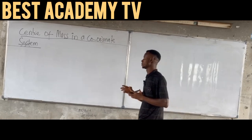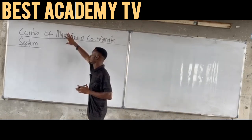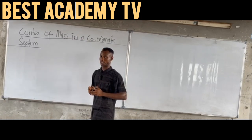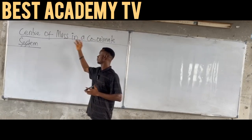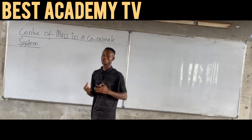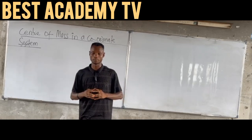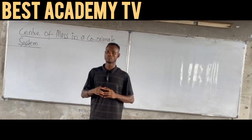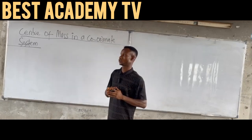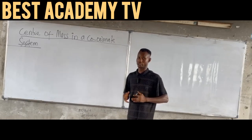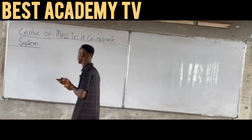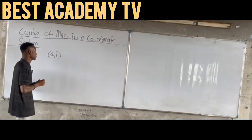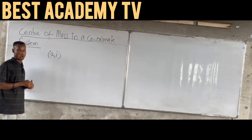What this means is that whenever you represent mass in their various coordinates, we are going to know what coordinate is at that point — that is the center of mass in a coordinate system. So to find center of mass in a coordinate system, whenever mass is given with their respective coordinates, you are required to calculate center of mass. For example, if I have 2 comma 1, this is said to be a coordinate system.